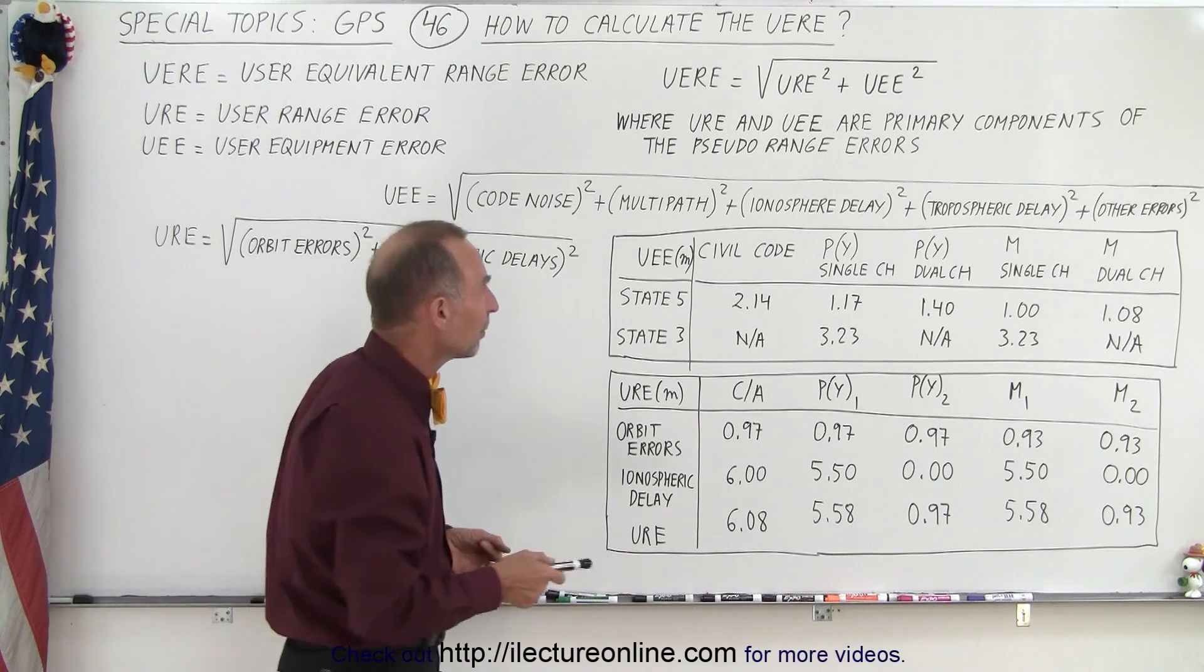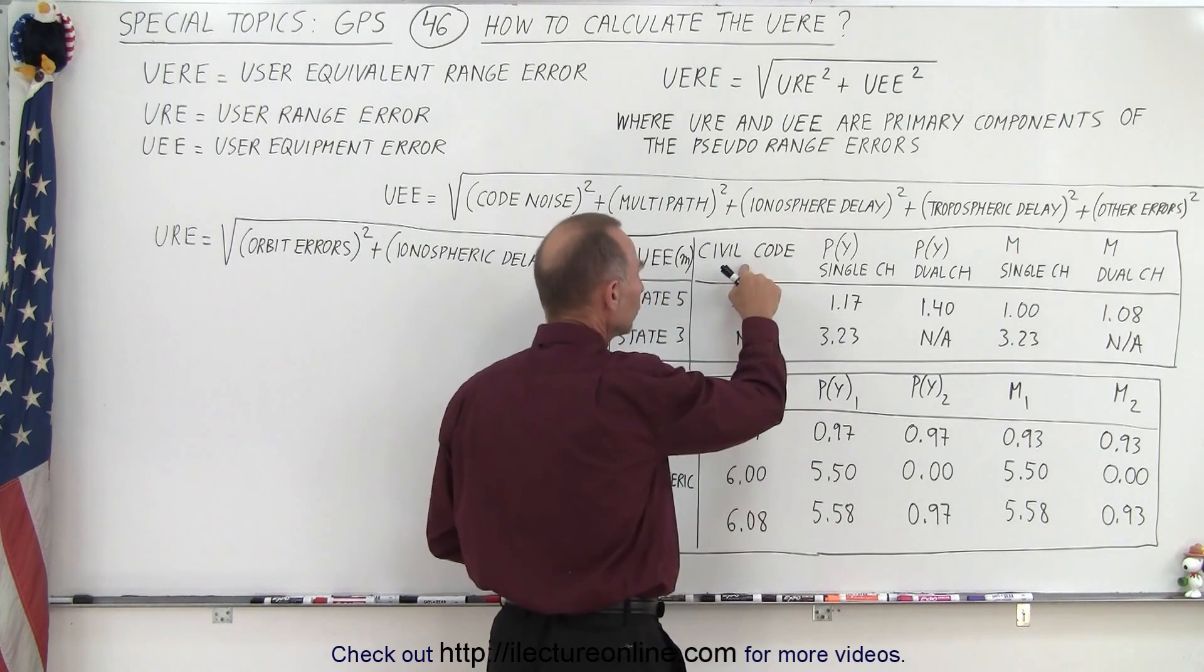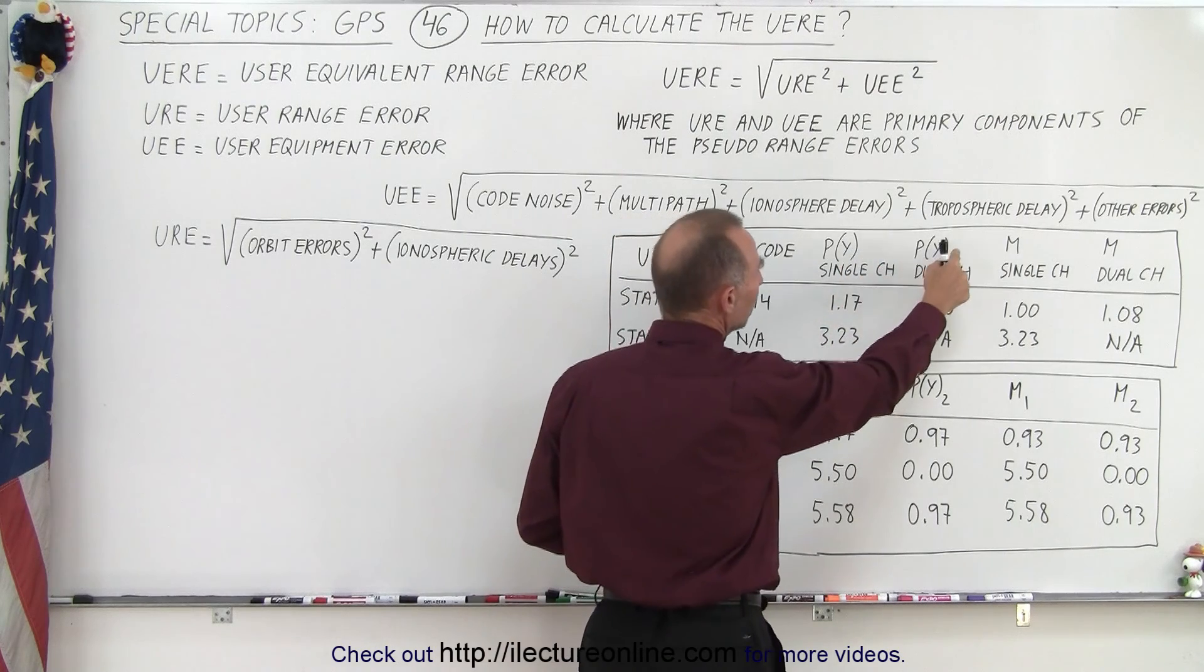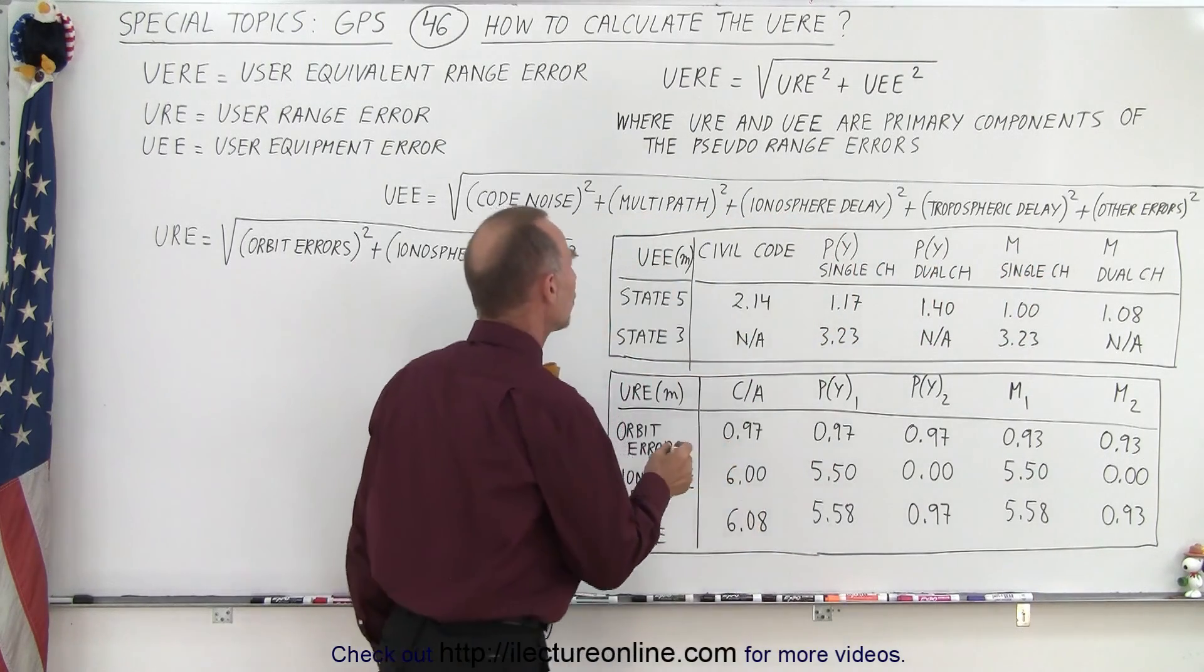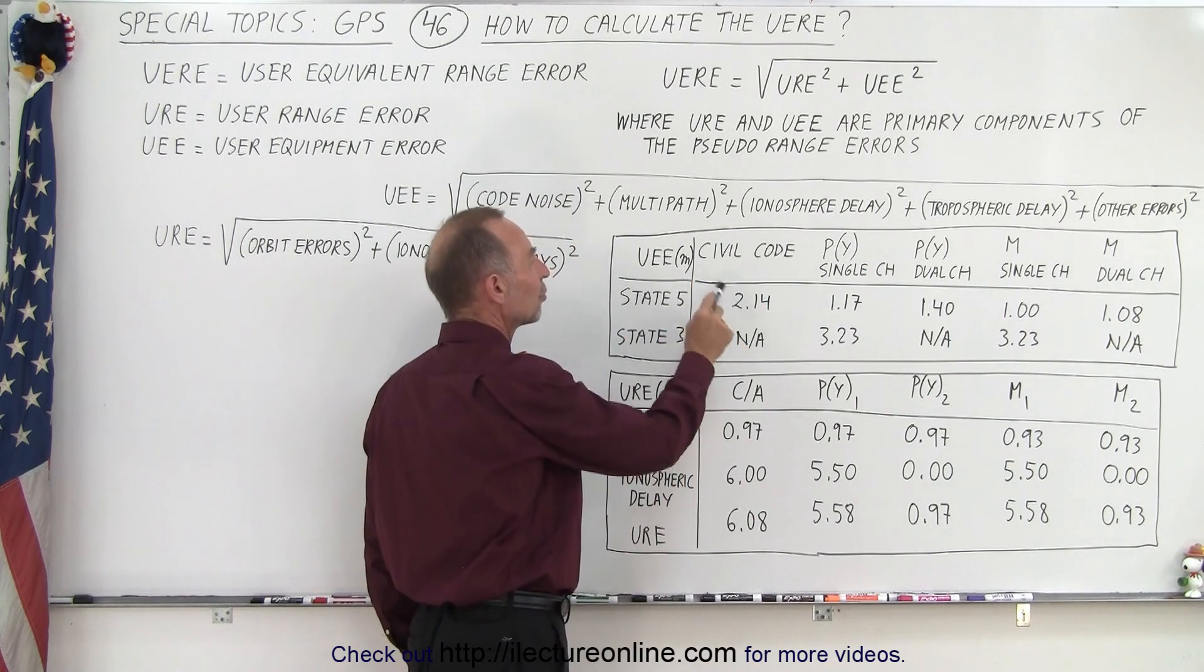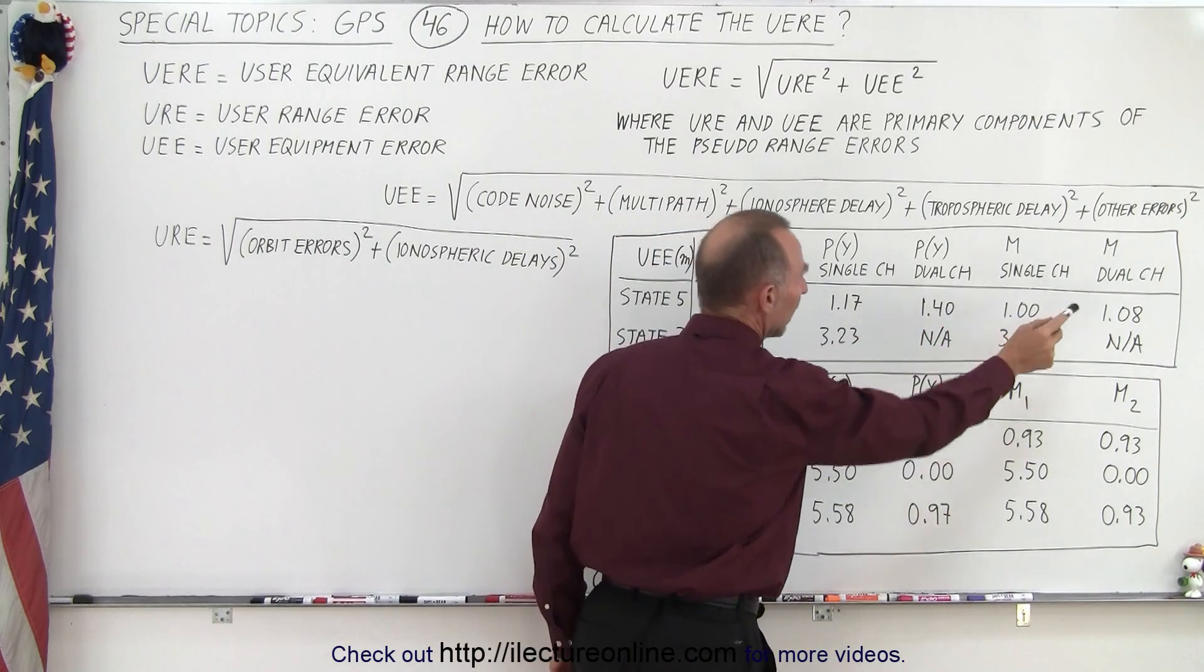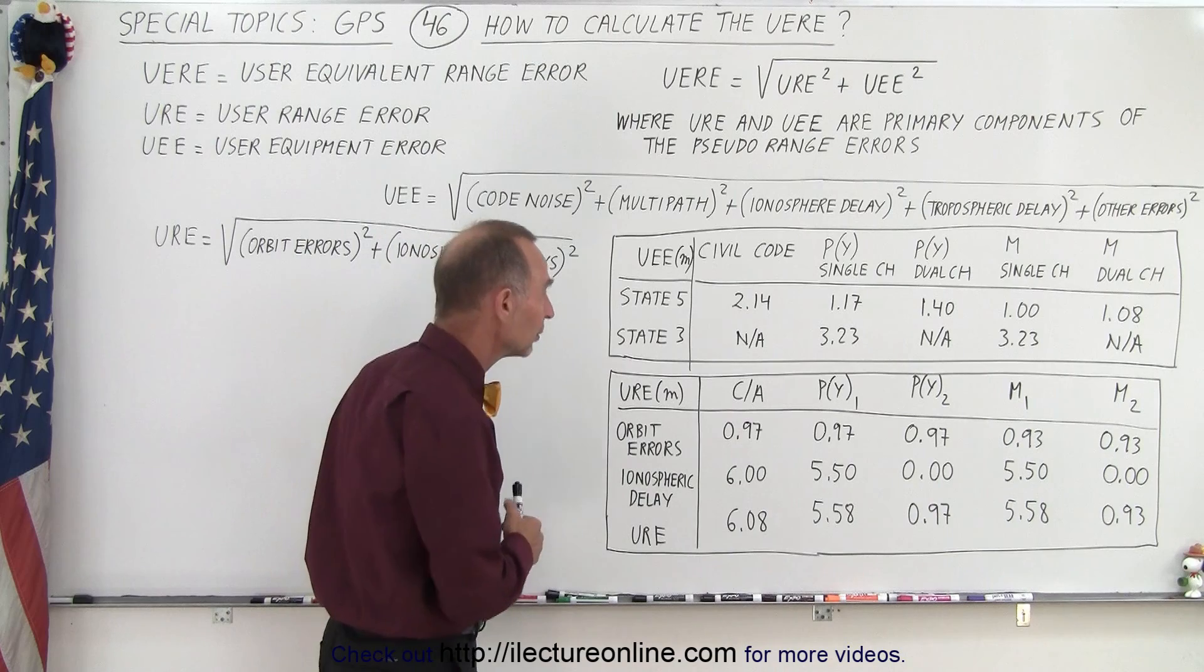Well, it does depend upon what mode we're in: the civil code or the CA code, PY single channel, PY dual channel, M code single channel, M code dual channel. And notice in state 5, we have values for these in terms of meters: 2.14, 1.17, 1.40, and 1.08. You can see that M code does a little bit better than PY code.